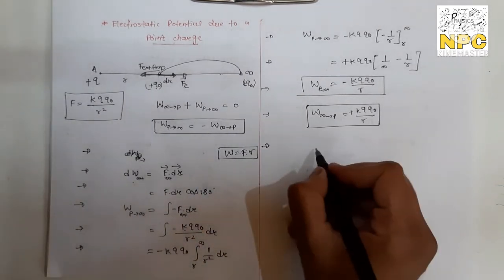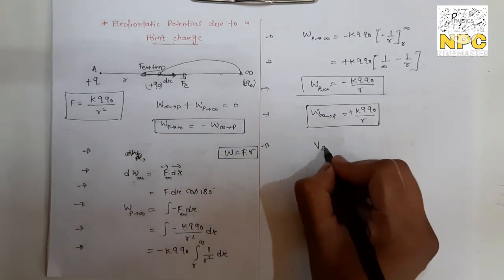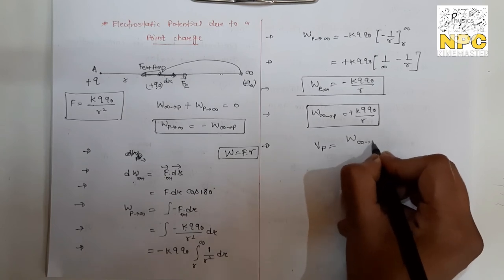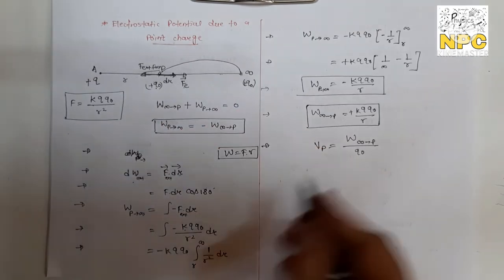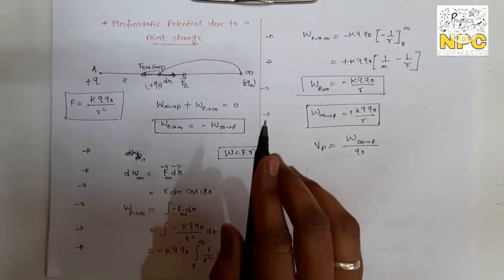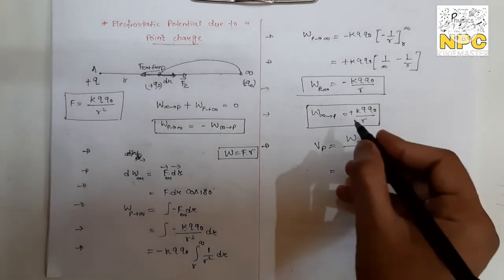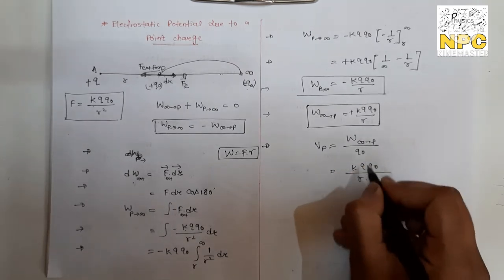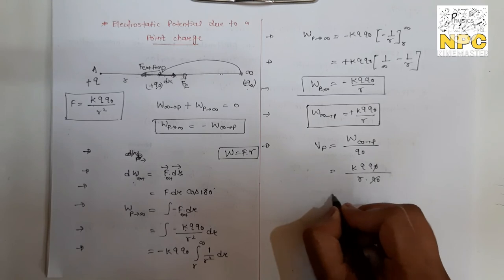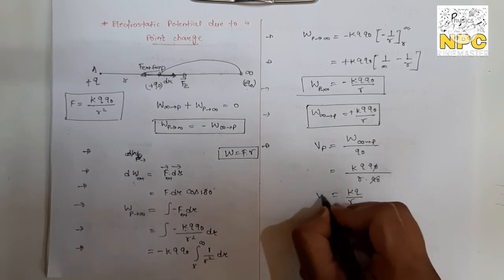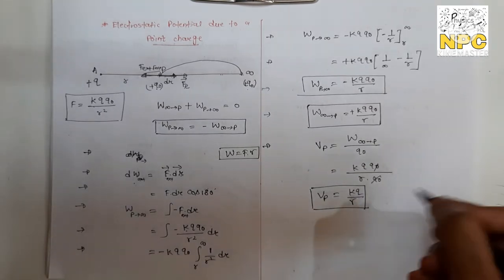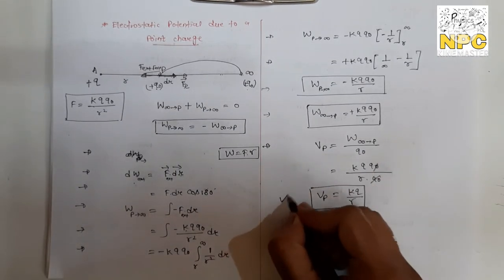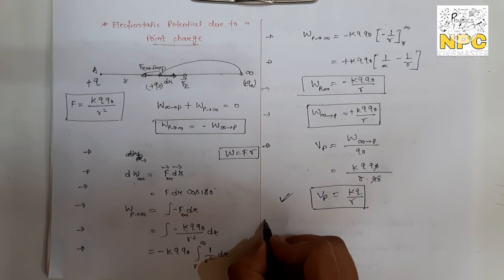Now we calculate the potential. Potential at point P equals work done in moving a positive charge from infinity to P, divided by Q₀. So V_P = kqQ₀/r ÷ Q₀. Q₀ cancels, giving V_P = kq/r. This is your final equation — potential at point P due to a point charge q at distance r.